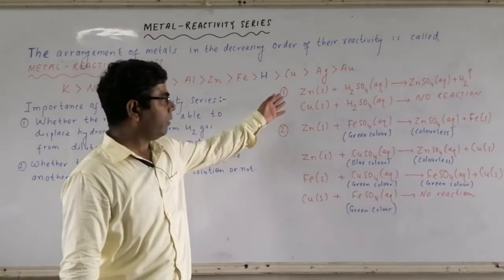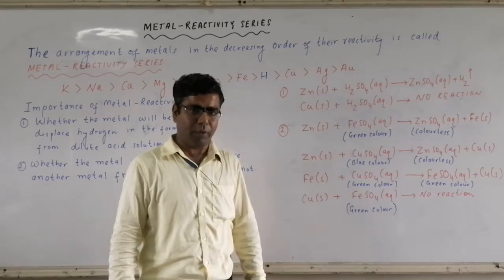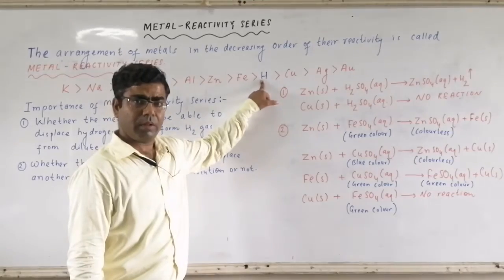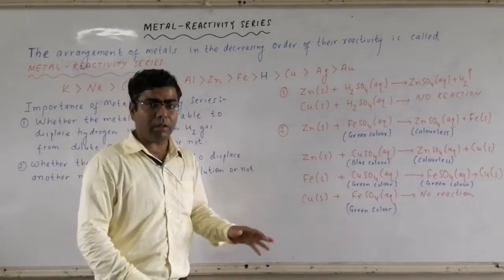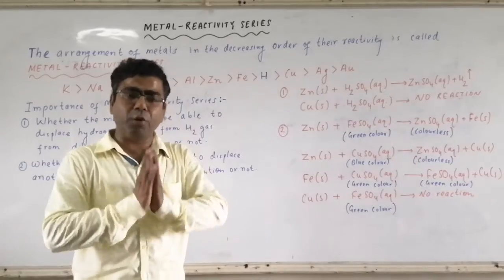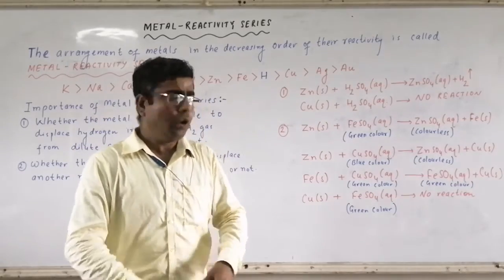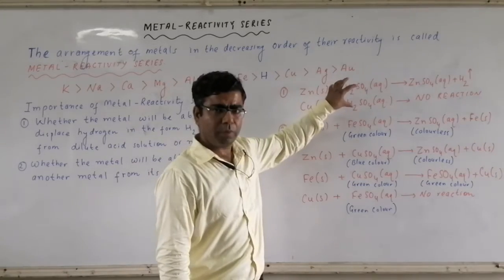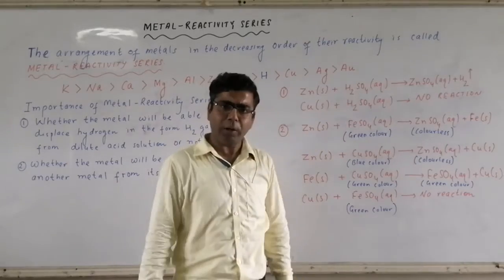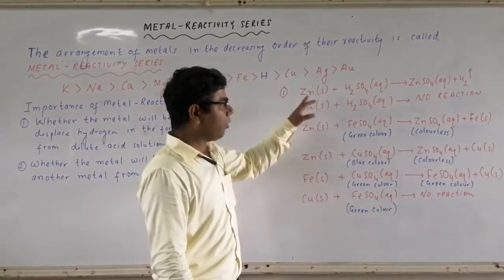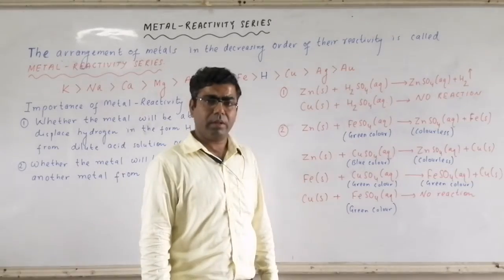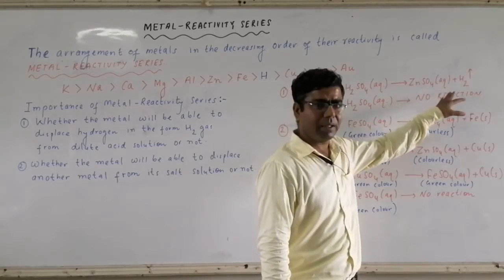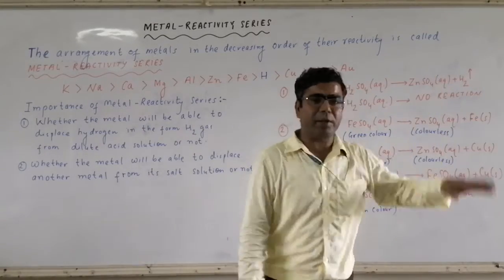Back to the reaction: Zn + H₂SO₄. Just compare the reactivity of zinc and hydrogen. As zinc is located on the left-hand side, it is more reactive — more electropositive — than hydrogen. So zinc can displace hydrogen from H₂SO₄. Being more reactive, it displaces hydrogen from the acid and combines with sulfate to give ZnSO₄ (aqueous), while H₂ gas is released.